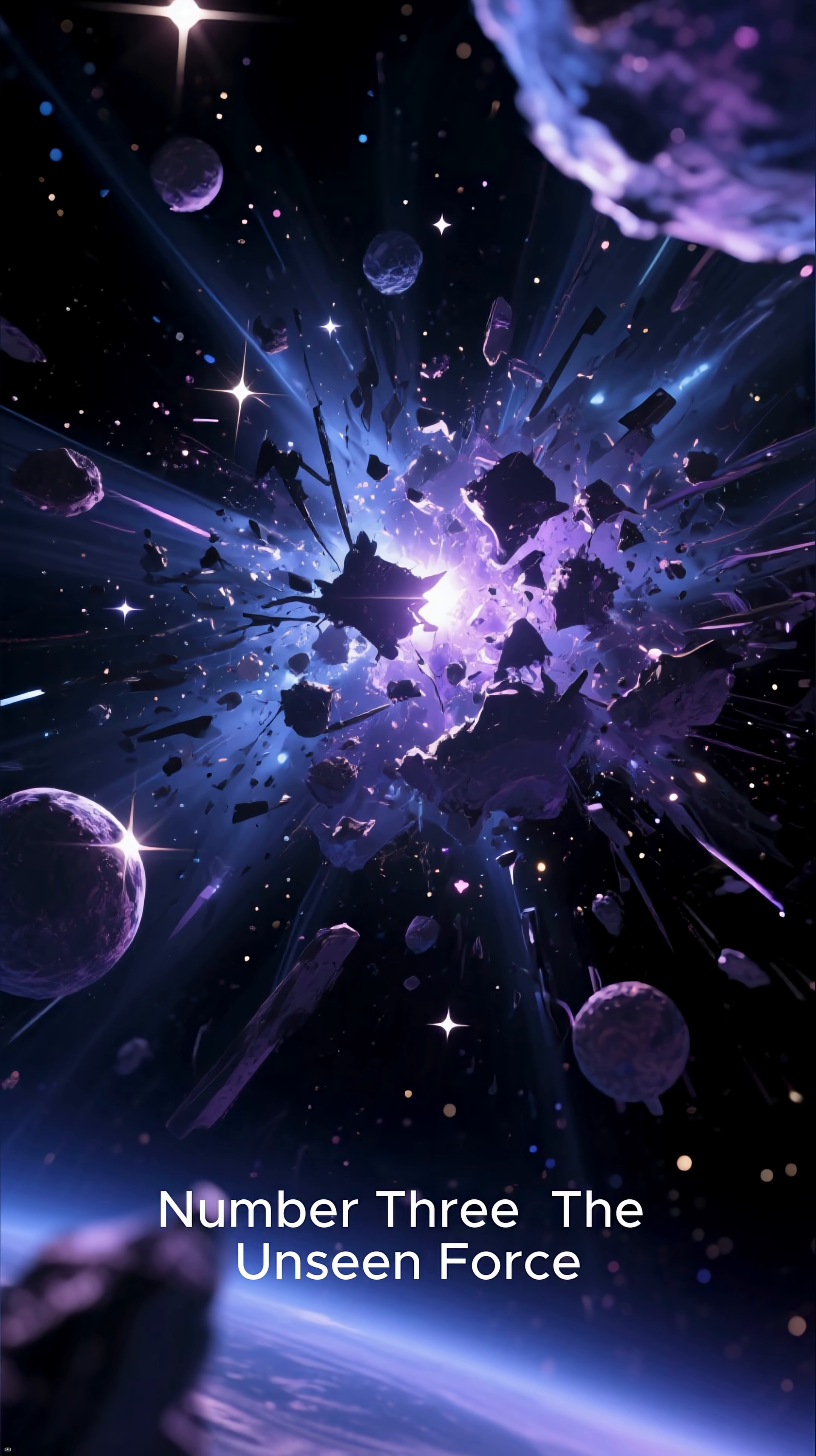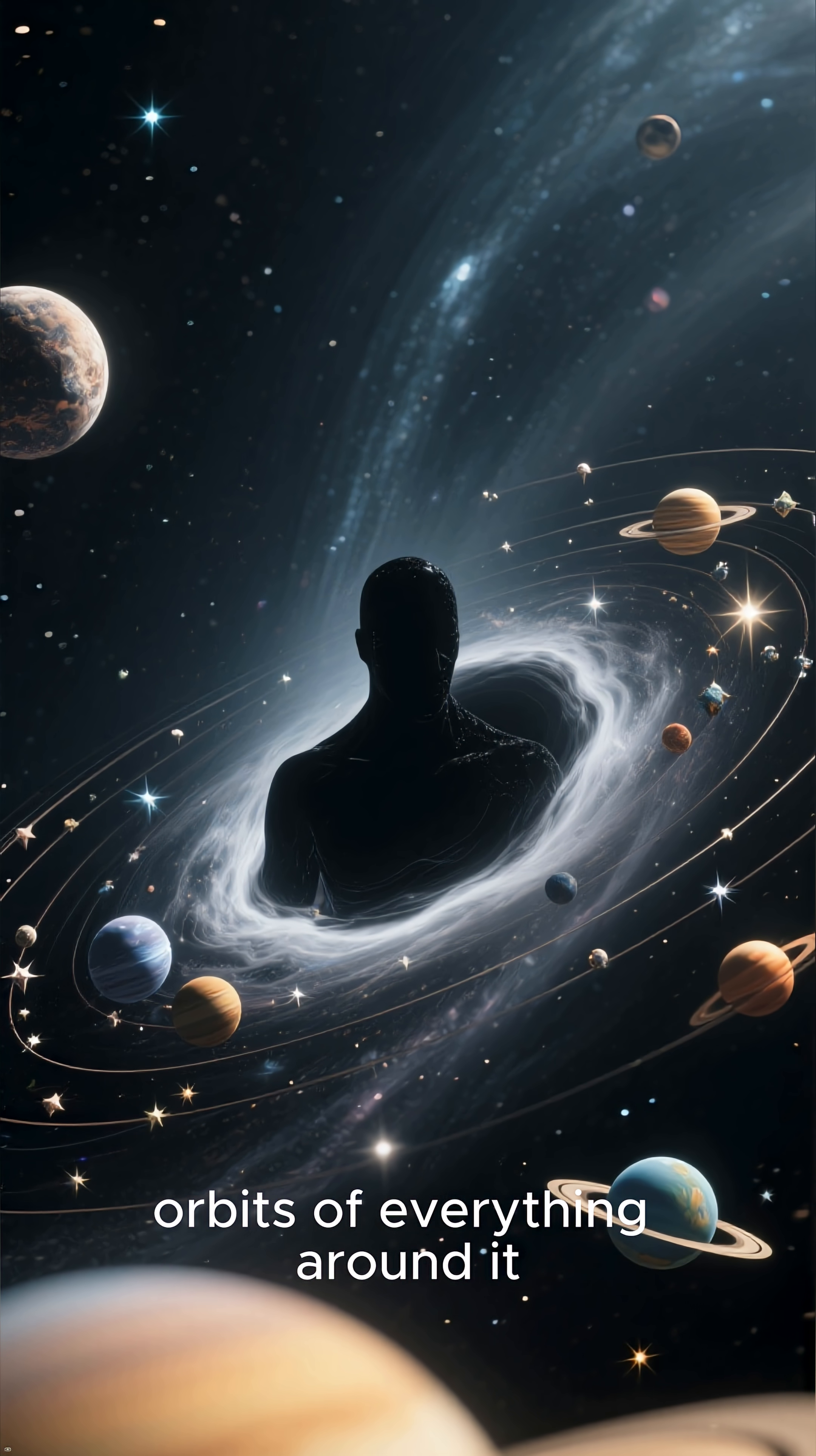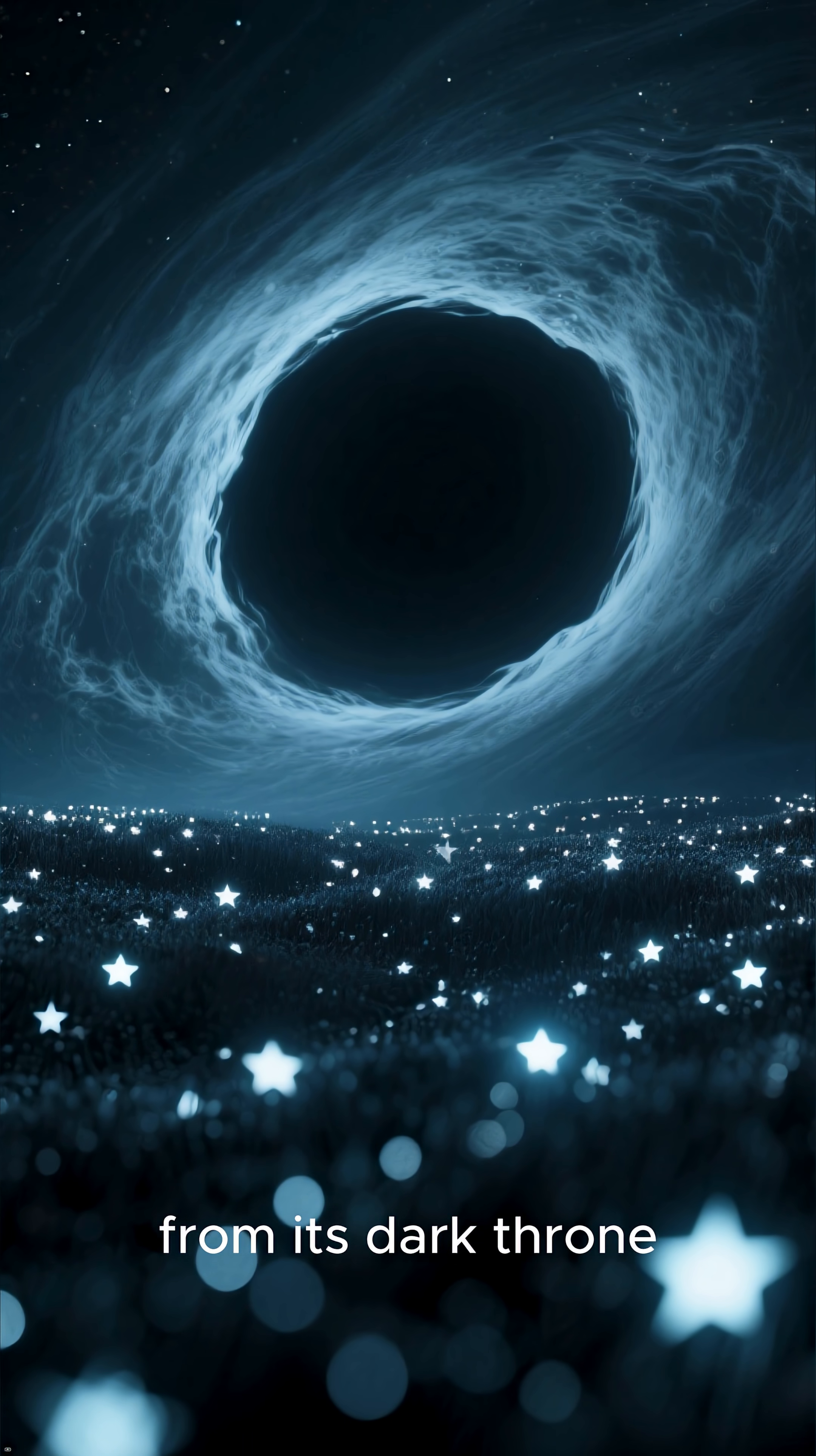Number 3. The Unseen Force. The third terrifying reality is the force that governs everything in our galaxy. The immense gravity of the supermassive black hole controls the orbits of everything around it, from stars and planets to gas and dust. It is a silent, terrifying force that governs our entire galactic neighborhood from its dark throne.